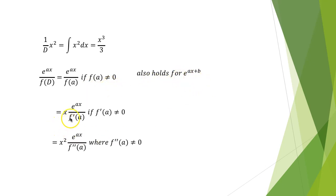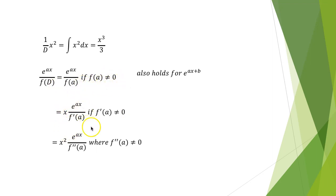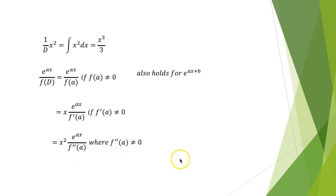It is also x·e^(ax) / f'(a) if f'(a) ≠ 0. This is used when f(a) = 0, which gives x·e^(ax) / f'(a). And if f'(a) = 0 as well, it becomes (x²/2)·e^(ax) / f''(a), provided f''(a) ≠ 0.